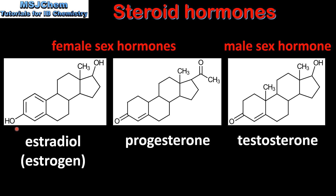The sex hormones differ in the functional groups that are attached to the steroidal backbone. For example, estrogen has 2 hydroxyl groups and a benzene ring. Progesterone has 2 ketone groups and an alkenyl group, which is a carbon to carbon double bond. And testosterone has a ketone group, a hydroxyl group, and an alkenyl group.